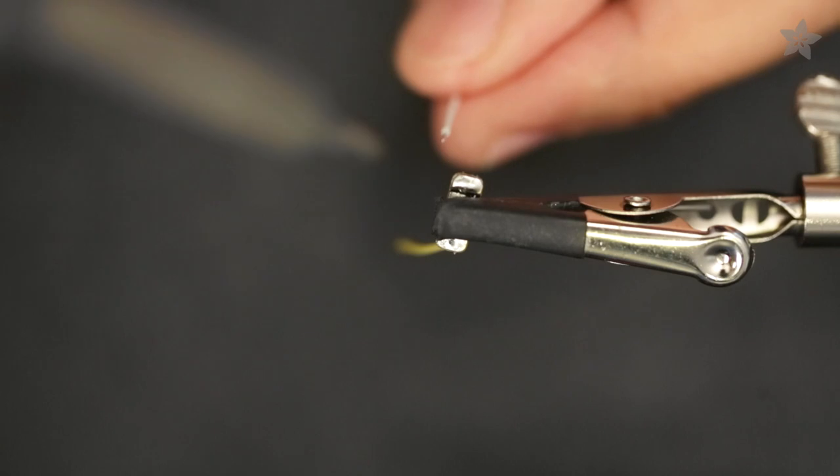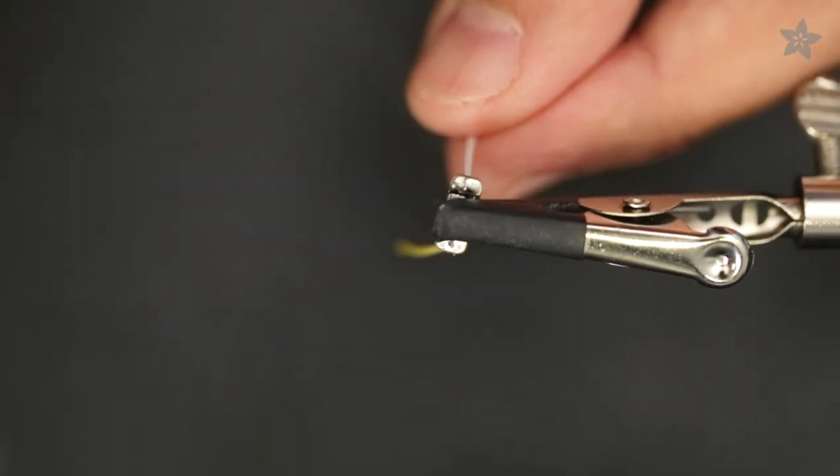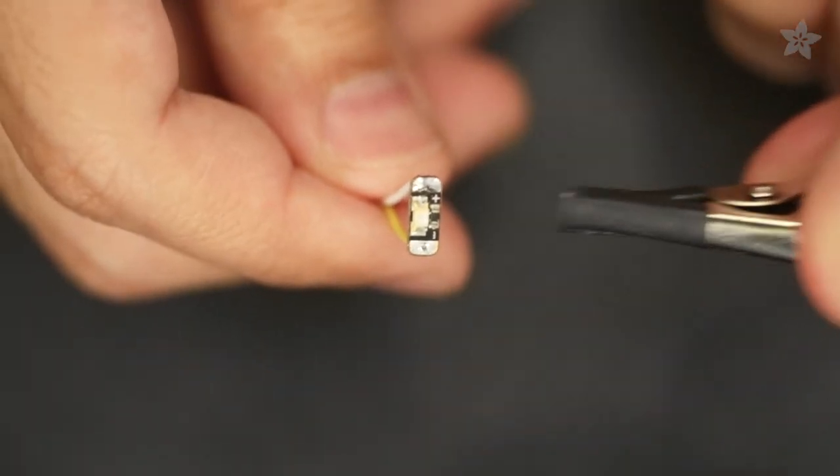Next up, we'll wire up the LED sequin to make this project light up when the coin chimes by connecting the LED to the trinket.